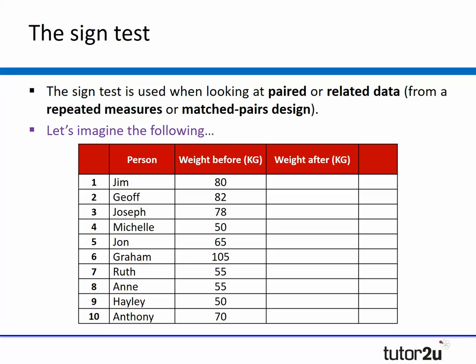I've just mocked up a really simple example here where I've taken 10 different names of employees at tutor2u. Let's imagine that Jim the CEO has asked us to all go on a weight watchers program. We've got our starting weight and then after six weeks we get our weight again in kilograms. Jim's shed 10 pounds, Jeff's lost a pound, I've actually gone up in weight, Michelle's stayed exactly the same, John's lost some weight, Graham's lost nearly half of his body weight, Ruth's lost a couple of pounds, Anne's lost a pound, Hayley's also lost a pound, and Angie's also put on 10 pounds.